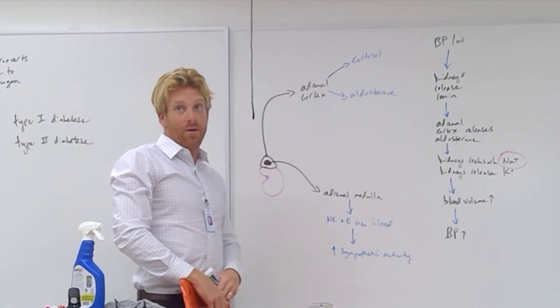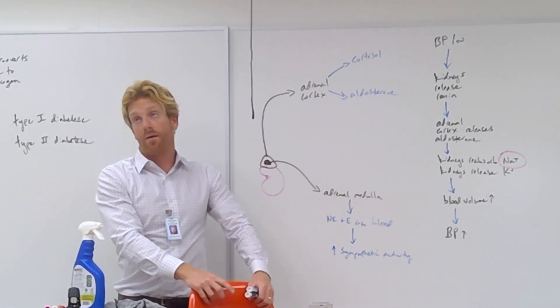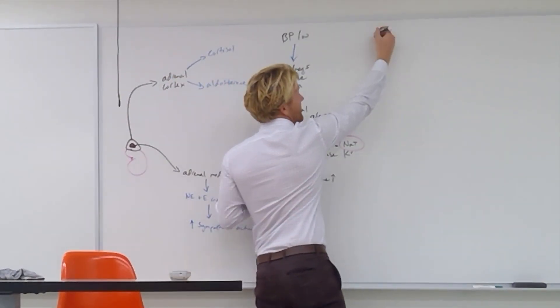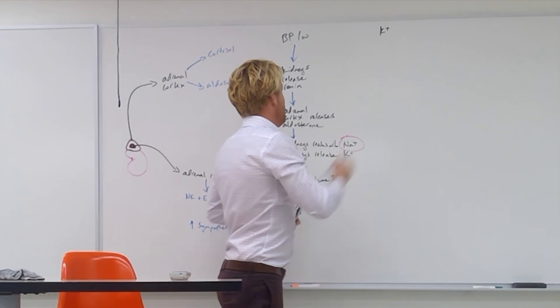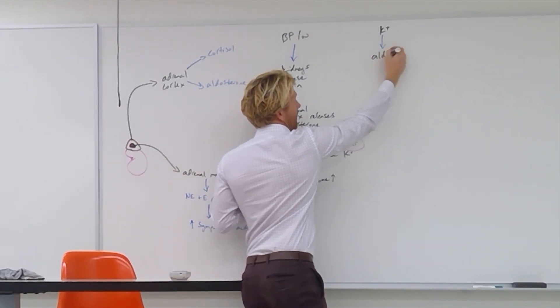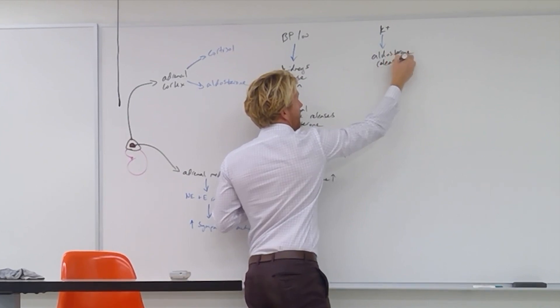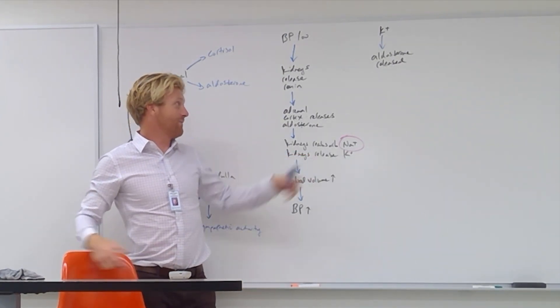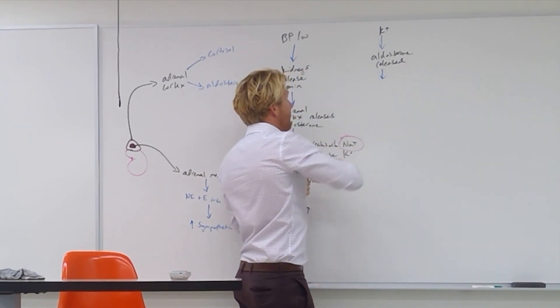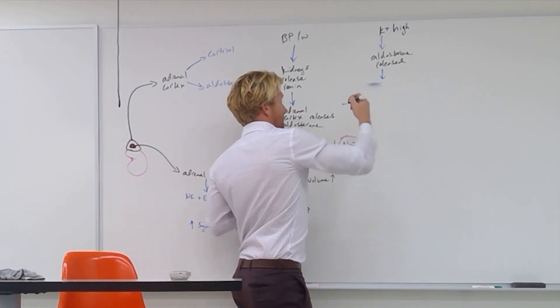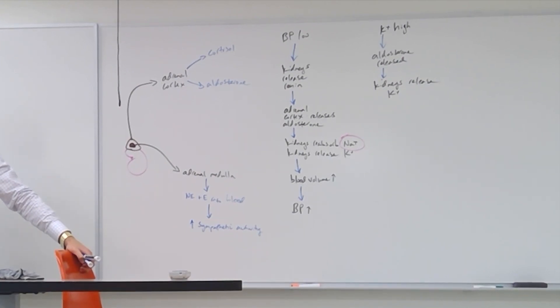Another time in which aldosterone is released from the cortex is when potassium is too high. This is like the easiest little situation ever. Potassium is too high. The adrenal cortex can measure this. When potassium is high, aldosterone is released. What does that do to potassium? The kidneys release potassium. We're perfect. So potassium is high, aldosterone released, problem fixed. It releases it. It just gets rid of it. It just releases it into the urine.